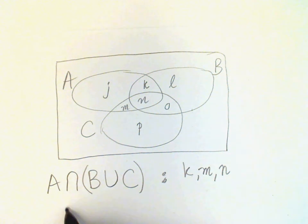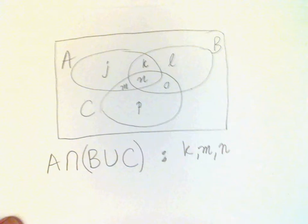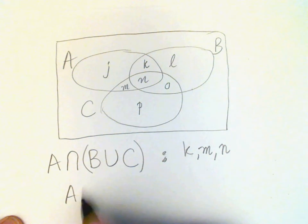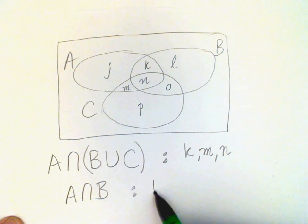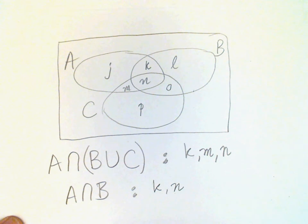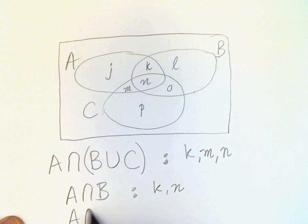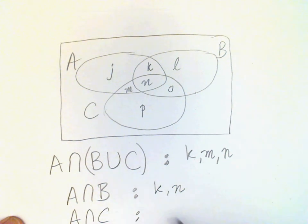Let's also look now where A intersects B. A intersects B in regions K and N. And A intersects C in regions M and N.